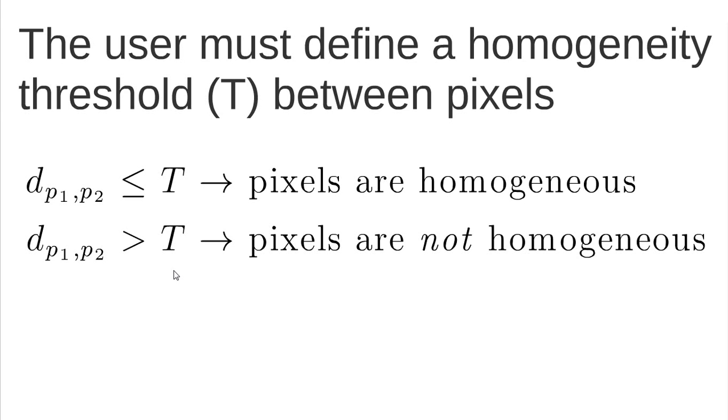And so the region growing approach computes the distance between two pixels and merges the pixels if they are homogeneous. In this case, we are explaining that the way to compute homogeneity is through Euclidean distance, but you can use any other distance that you want.